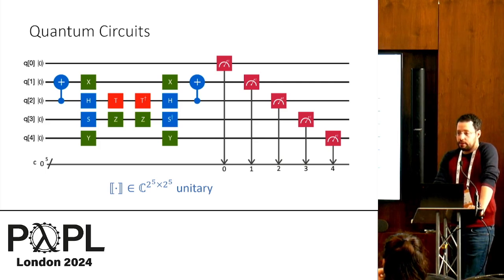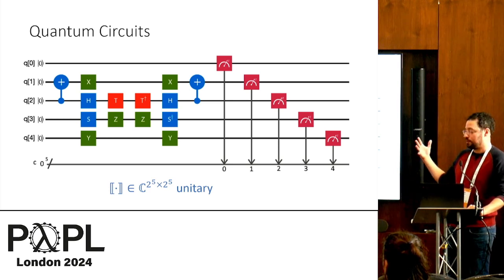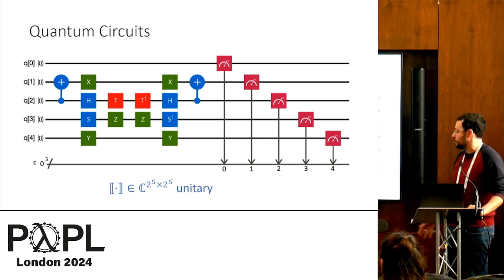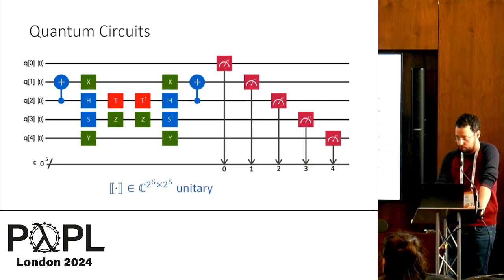And from these gates, we can compose them and construct quantum circuits. So for example, here we have a circuit over five qubits, and it's the natural way to write its semantics is as a matrix that manipulates two to the five, complex vectors of two to the five, and it should be unitary.